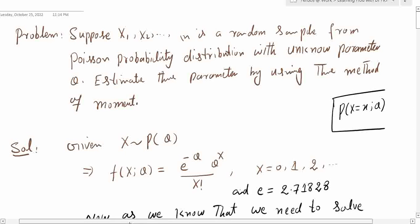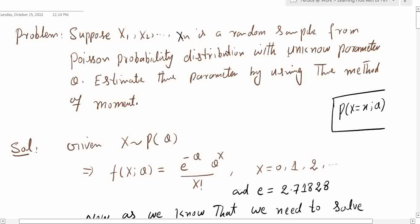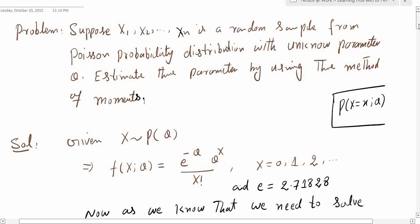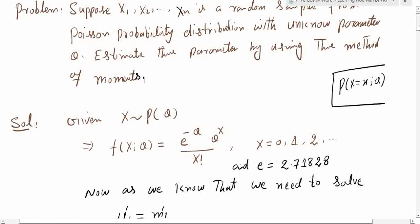Let's see the statement of the problem. Suppose that X_1, X_2, up to X_n is a random sample from a Poisson probability distribution with unknown parameter theta — this can be lambda or another parameter. We need to estimate the parameter of this distribution using the method of moments. Since there is a single parameter, we need to calculate the first population raw moment and the first sample raw moment, then compare these two moments and solve for the unknown parameter theta.